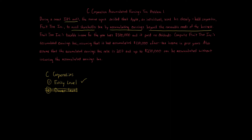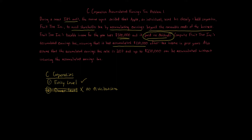In this case, there was no reasonable need of the business to keep the money. There was $500,000 of taxable income this year, no dividends paid, and $130,000 of accumulated earnings in prior years. C corporations face double taxation, which everyone dreads. Some C corporations try to avoid double taxation and achieve only one level of taxation by not paying out distributions. If you pay no dividends, you can try to avoid that owner level tax.